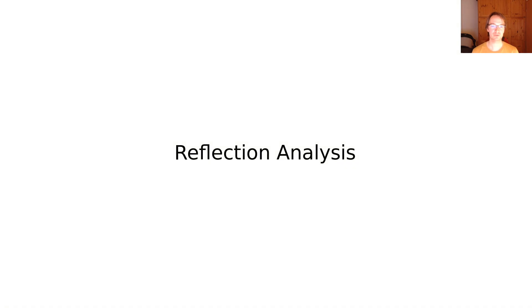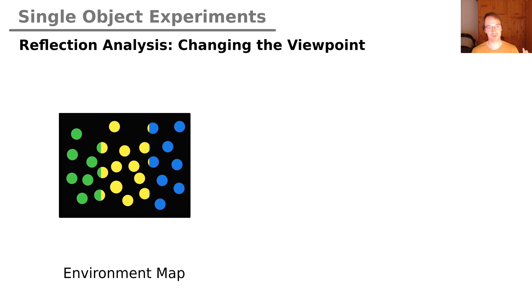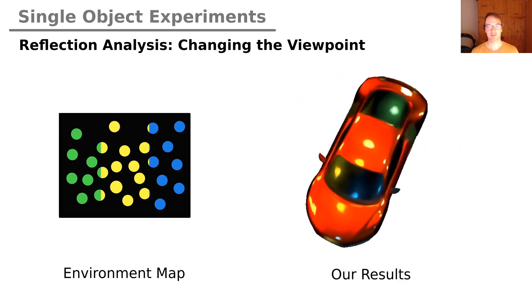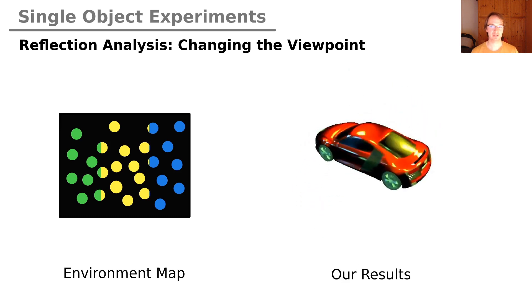And we can also model multiple light sources in the form of an environment map and get these specular reflections on the car surface here.